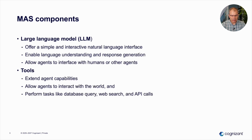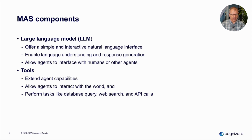The main components of a multi-agent system are large language models. They offer a simple and interactive natural language interface. They enable language understanding and response generation and allow agents to interact with other agents or humans. The second component of multi-agent systems is tools, which extend the capability of the agents and allow them to interact with the world and perform tasks like database queries, web searches, or API calls.